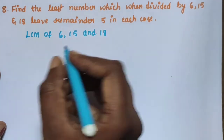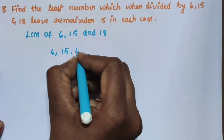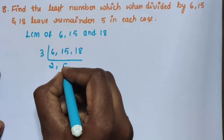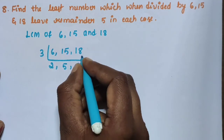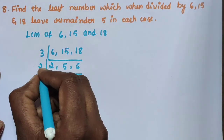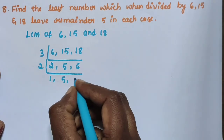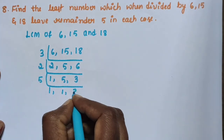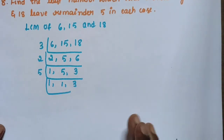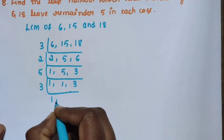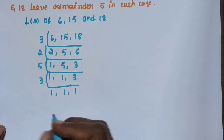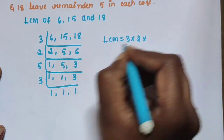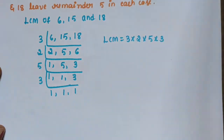LCM of 6, 15 and 18: Take 3 — 3 twos are 6, 3 fives are 15, 3 sixes are 18. Again take 2 — 2 ones are 2, 5 as it is, 2 threes are 6. Again take 5 — 1, 5 ones are 5, 3 as it is. Next take 3 — 1 one, 3 ones are 3.